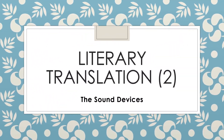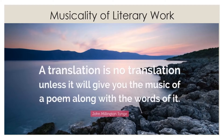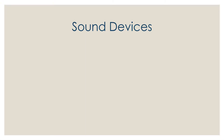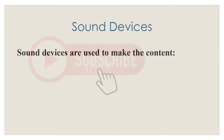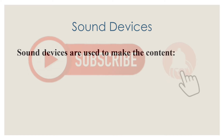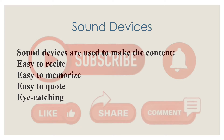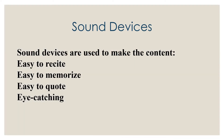Literary translation part 2: the sound devices. One of the distinctive features of literary translation is musicality. Sound devices are used to make the content easy to recite, memorize, and tell. The translator should pay attention to the function of these features in either language to see whether to retain such devices like alliteration, assonance, and rhyme in the target text or not.